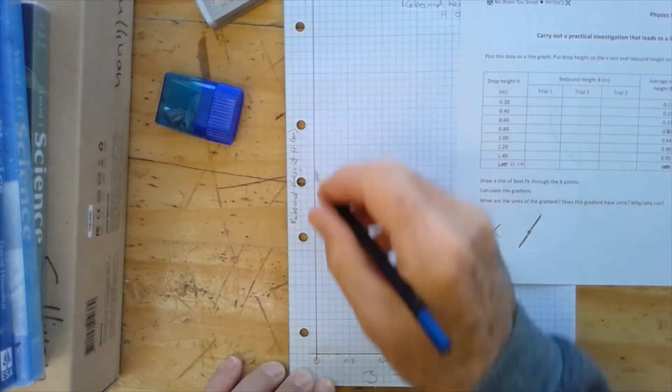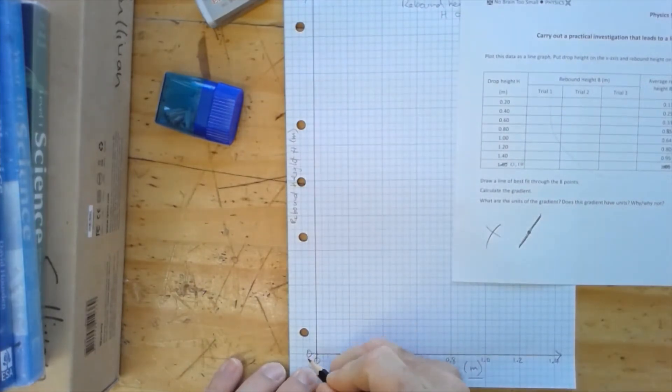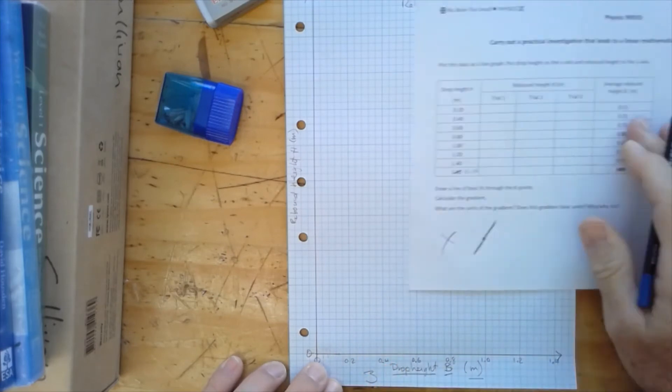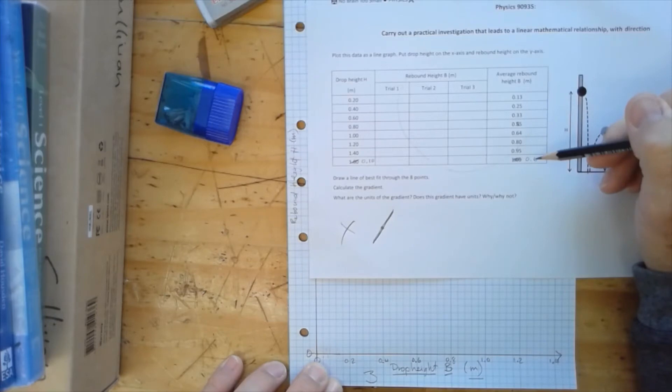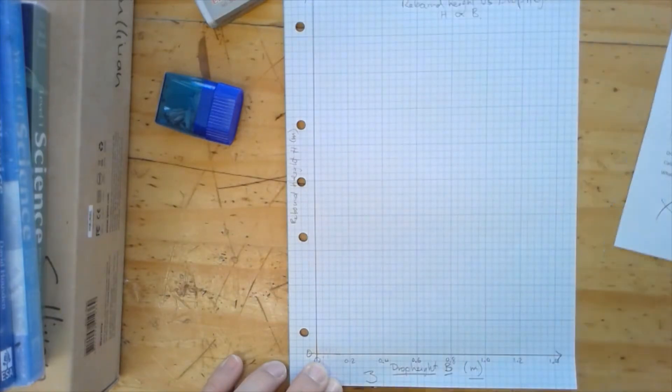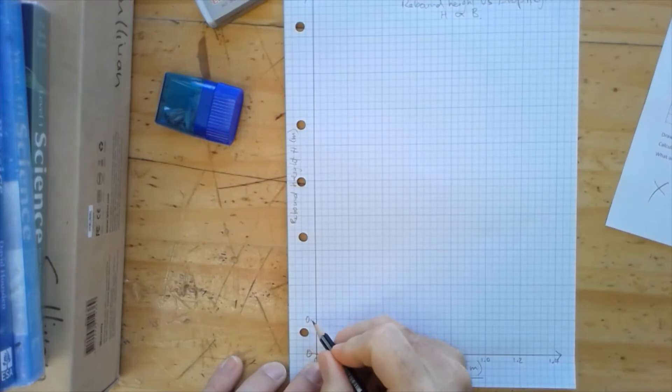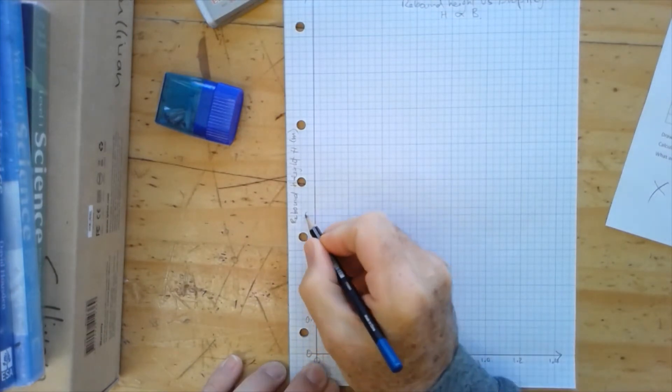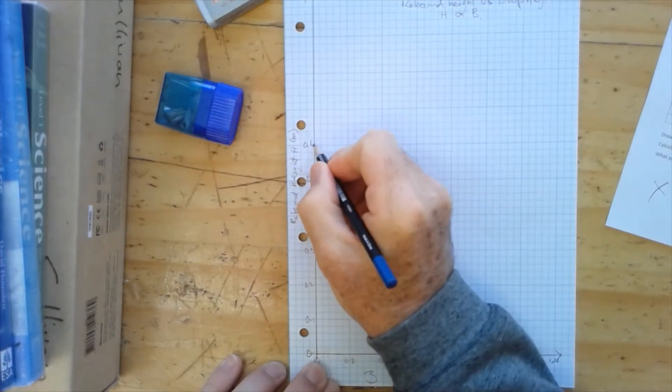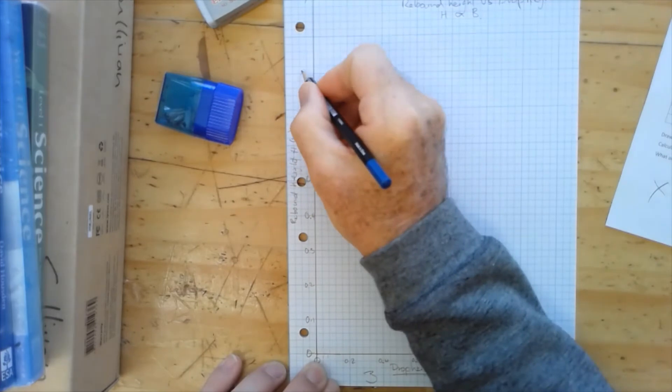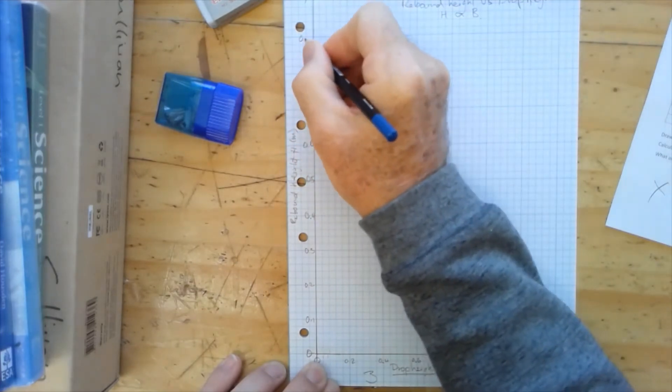And the same on the dependent variable axis, the y-axis. We're going to start at zero, and in our dependent variable, we go from zero up to 0.95, so we're going to go 0.1, 0.2, 0.3, 0.4, 0.5, 0.6, 0.7, 0.8, 0.9, 1.